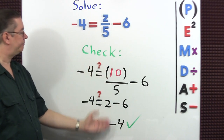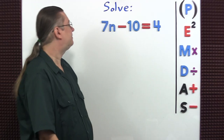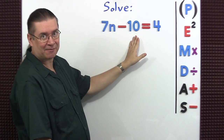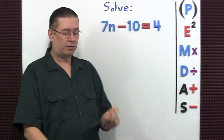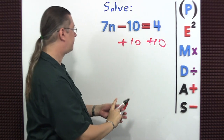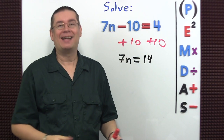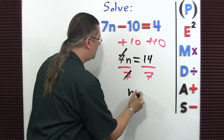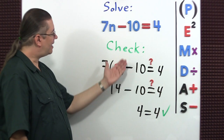Here's the check of our solution. Now let's solve this equation without writing all those words. The order of operations: multiply by seven, then subtract ten — multiplication before subtraction. So now let's perform the inverse operation in reverse order: add ten to both sides. 7n equals 14; next, divide both sides by seven. n equals 2. When I perform the check, I can see I got the right answer.